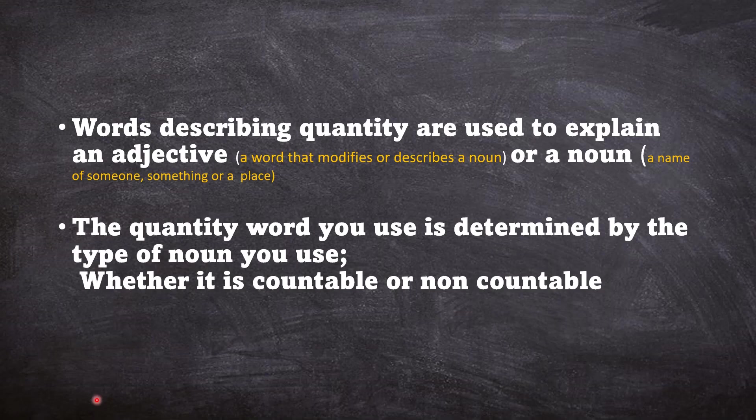Words describing quantity are used to explain an adjective or a noun. So these little yellow words modify the meaning of an adjective or a noun. The quantity word you use is determined by the type of noun you use, whether it is a countable or non-countable noun.